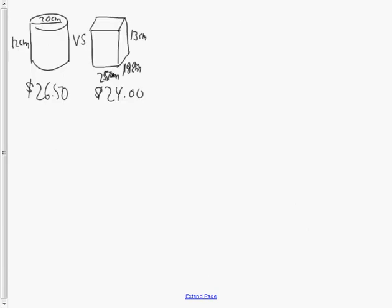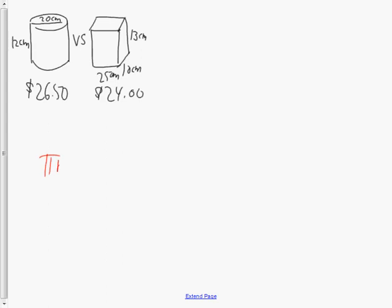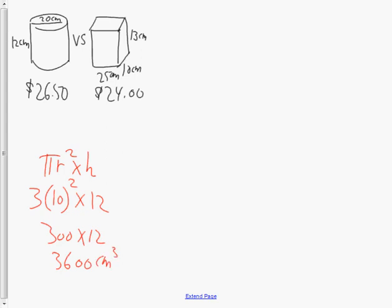Question 5: you have two containers, one a cylinder and one a rectangular prism, containing the same liquid — which is the better value? Find the volume of the cylinder using the formula. Treating pi as 3, the radius is 10 (since diameter is 20), and the height is 12. That gives 300 times 12, which is 3,600 centimeters cubed — or milliliters since it's a liquid.